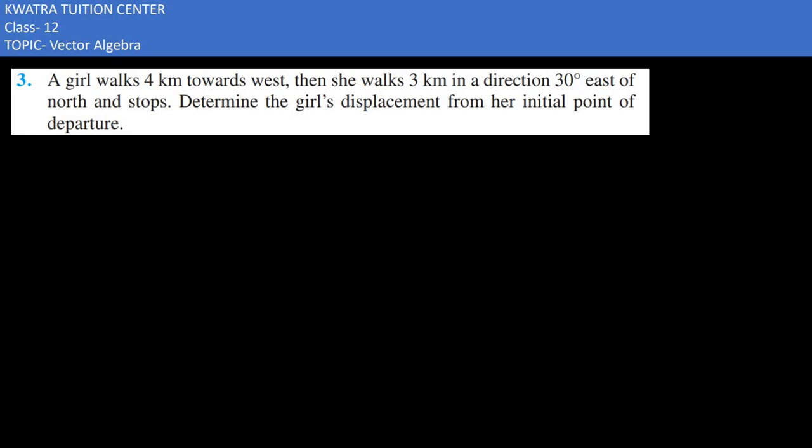Let's do this third problem here. It says a girl walks 4 km towards west, covering 4 km distance. Then she walks 3 km in a direction 30 degrees east of north. Now where is east of north?